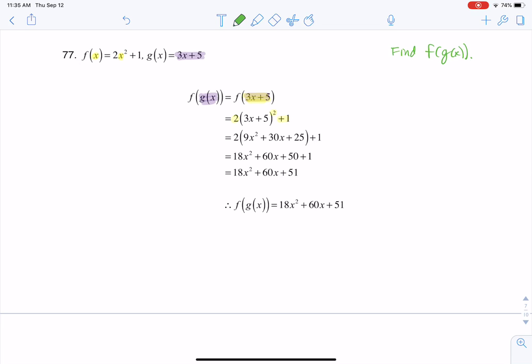And once you get to this part, we just have a bunch of algebra to work out. So if you're wondering how I got from this step to this step, I foiled, or I could say I double distributed. So 3x plus 5 squared, I want to be clear, it's not equal to 9x squared plus 25.